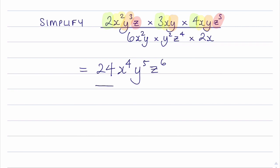I'm now going to deal with the denominator, and I'm going to deal with it in exactly the same way. So the first thing is to look at the numbers. I've got the 6 and the 2, and 6 multiplied by 2 is 12.